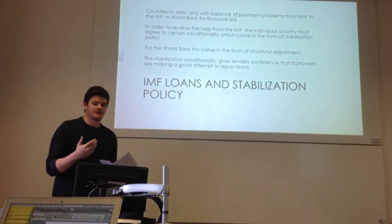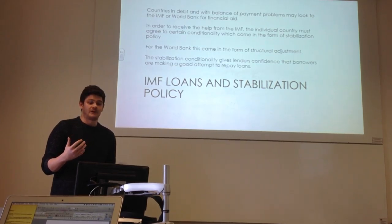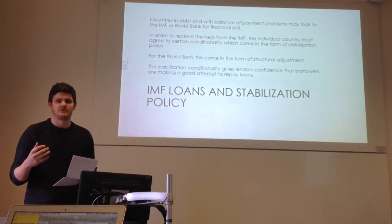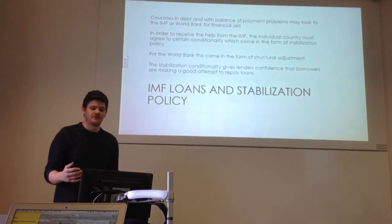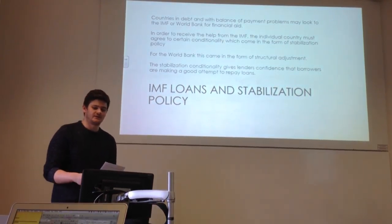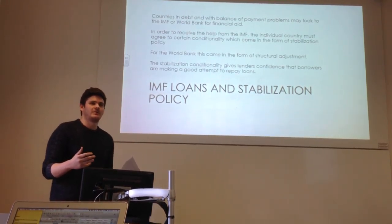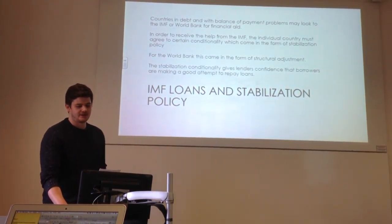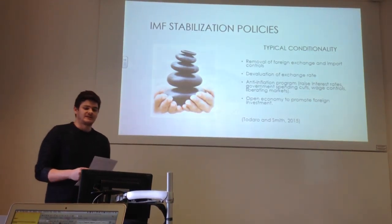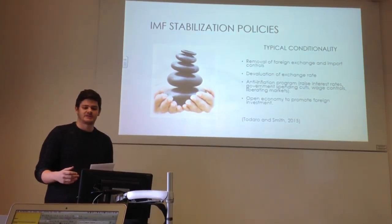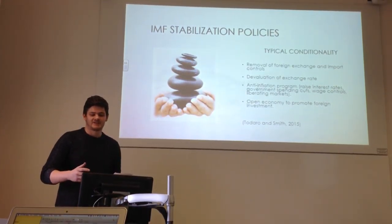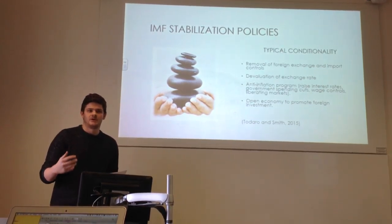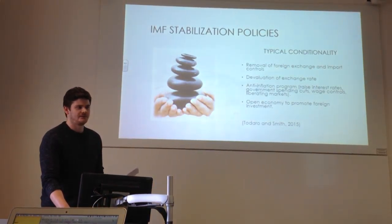Another option is to approach the IMF and the World Bank for loans. To receive help from the IMF, there are conditionalities which come in the form of a stabilisation policy. For the World Bank, it comes in the form of structural adjustment. Unlike commercial bank loans, which come with no conditionality, the IMF and World Bank have particular requirements. Typical IMF conditionalities include removal of foreign exchange and import controls, devaluation of the exchange rate, anti-inflation programs such as raising interest rates, spending caps, wage controls, and opening the economy to promote foreign investment.